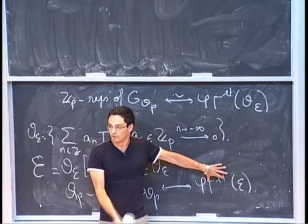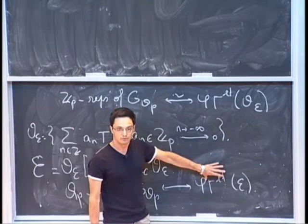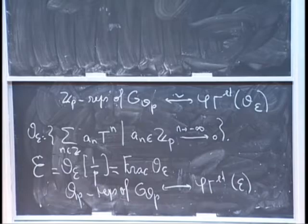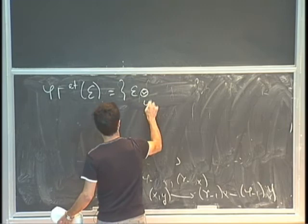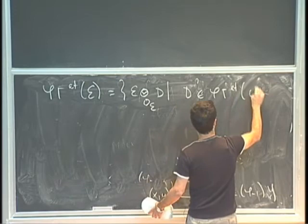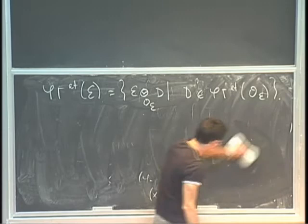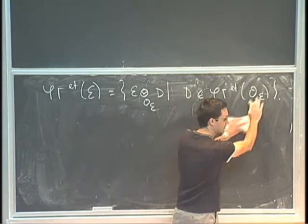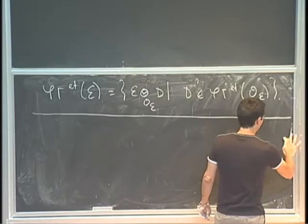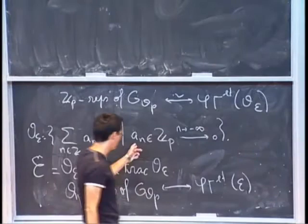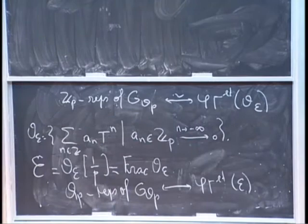It's natural to impose that there should be some stable lattice in your phi-gamma module preserved by everything, which is an étale phi-gamma module over O_E. The existence of such a lattice is not automatic. So to make things simple, I can just define phi-gamma étale of E as E tensored over O_E with D, over all possible D in phi-gamma étale of O_E. And then I really get an equivalence of categories. This issue of being étale is going to reappear today when we discuss the Robba ring.